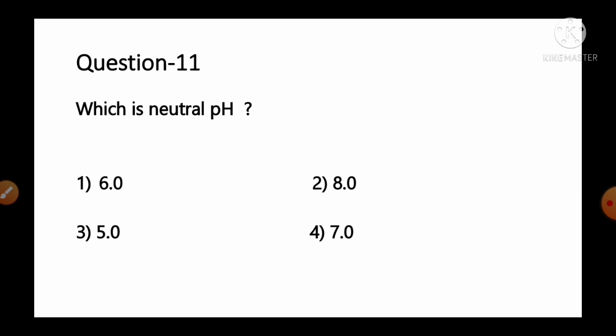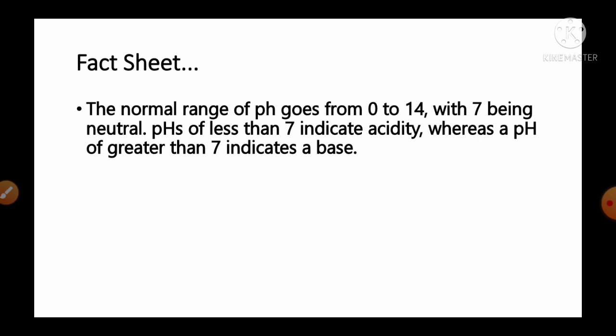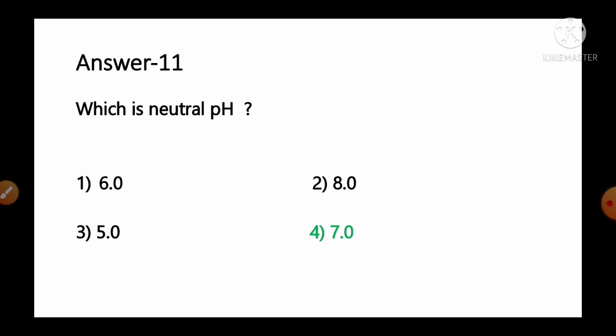Question number 11: What is neutral pH? Options: 1) 6.0, 2) 8.0, 3) 5.0, 4) 7.0. The normal range of pH goes from 0 to 14 with 7 being neutral. A pH less than 7 indicates acidic pH, whereas pH greater than 7 indicates basic pH. So option number 4, 7.0, is the correct answer.